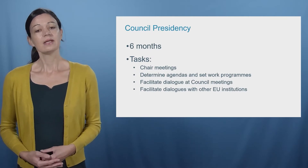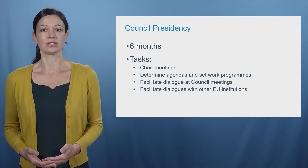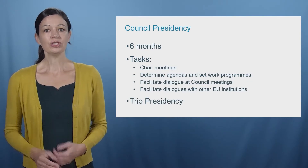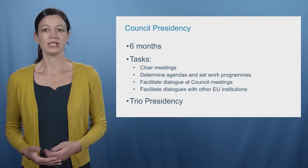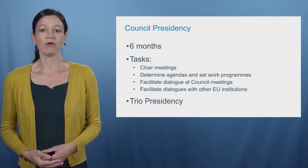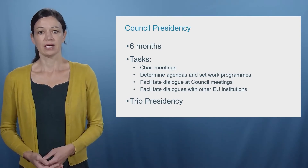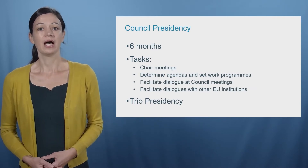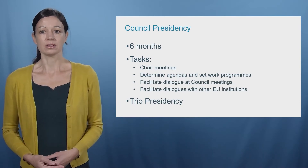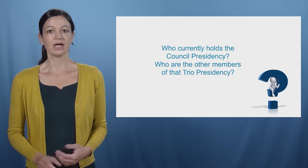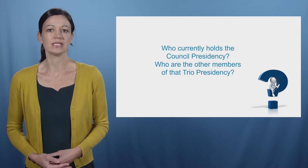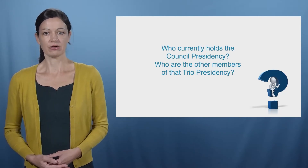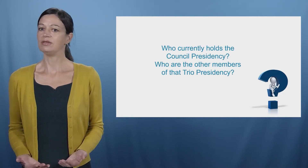In addition, the Presidency facilitates dialogue with other EU institutions, such as the European Parliament and the European Commission. To ensure continuity among the six-month rotating Presidencies, the Lisbon Treaty introduced the concept of a TRIO Presidency. This means that a group of three Presidencies together develop a common program and cooperate on the longer-term vision for EU policy. Let's look at who currently holds the EU Presidency and what their priorities are. Who are the other members of the current TRIO Presidency? Can you find their work program?